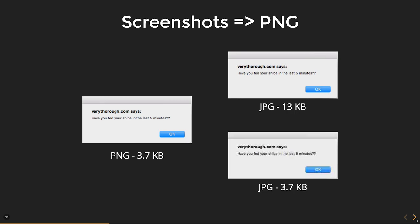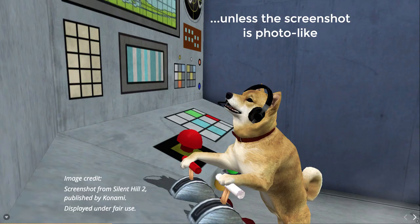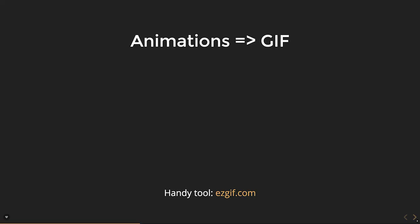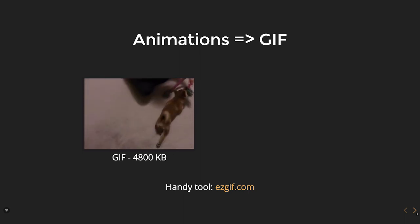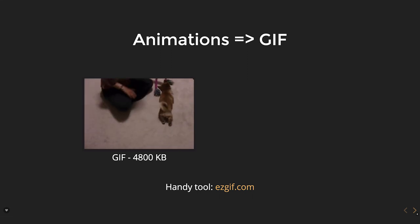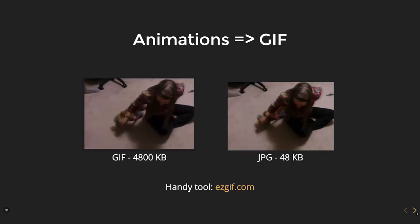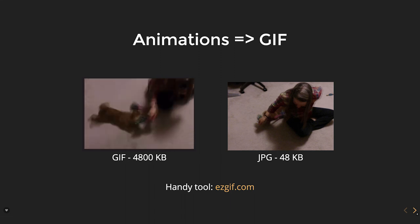Unless your screenshot is photo-like. If it is like a photo, even though it's a screenshot, chances are a JPEG is actually better. For animations done as an image, a GIF is the way to go — and I say GIF, not JIF, GIF is peanut butter as far as I'm concerned. Here's an animated GIF, and it's huge — 4,800 kilobytes, 4.8 megabytes. Animated GIFs are actually really big. You could do it as a JPEG to make it way smaller, but then it doesn't animate, so that's not very useful.